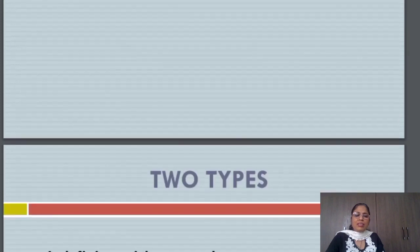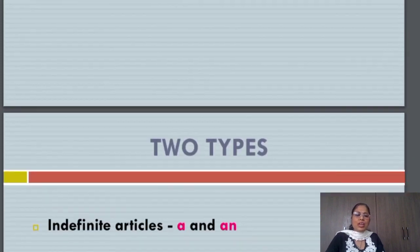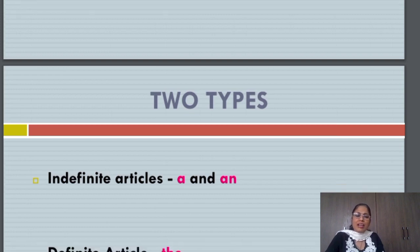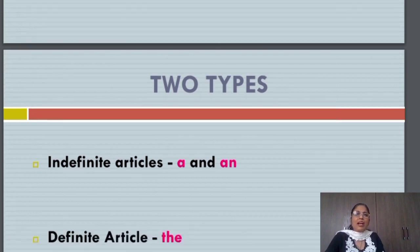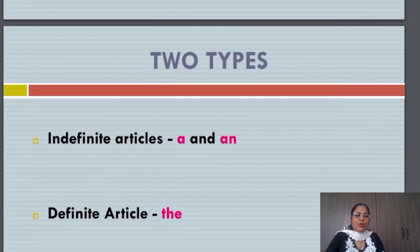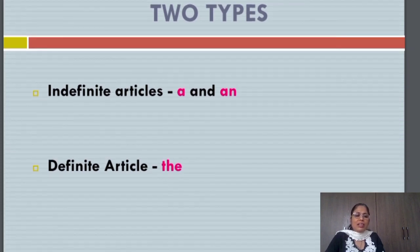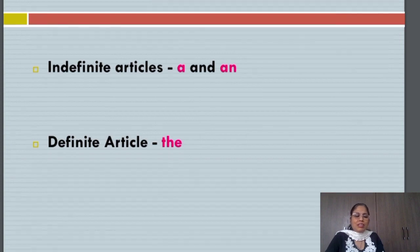These articles can be divided into two categories. The first one is a and an. A and an are actually only one article. The meaning, purpose and usage of a and an is the same. I will explain the difference to you shortly. And the second category is the definite article the.